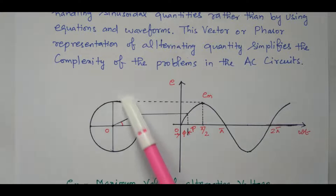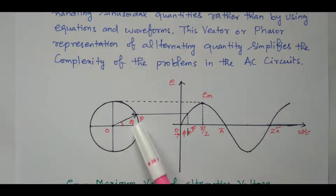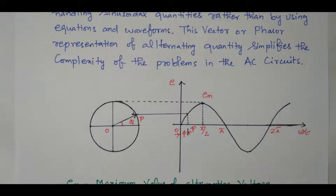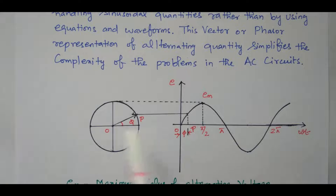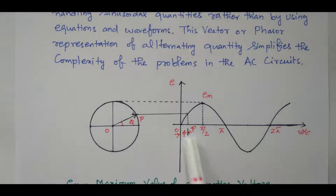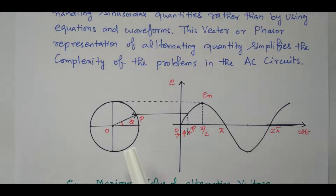The alternating waveform can be represented as a phasor diagram for easy understanding. The voltage keeps rotating — increasing, decreasing, again increasing and decreasing in both positive and negative directions. We have a point 0 to P, and an equivalent line is drawn that intersects at point P. This angle is phi, and the same angle phi appears on both sides — both are equal. When the voltage increases, the angle also increases. This angle can be easily measured from the phasor diagram itself. The entire sine wave can be represented as a phasor diagram for easy understanding.